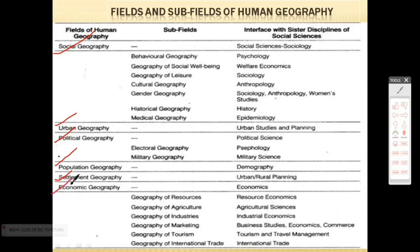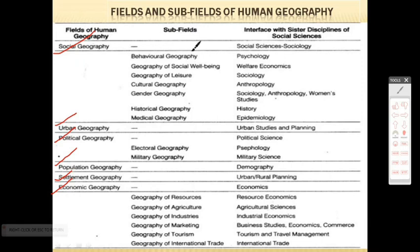Human Geography can be divided into six sub-fields, and each of these six fields can be further subdivided into various branches. Let us start with the first one, that is Social Geography.